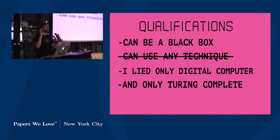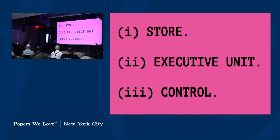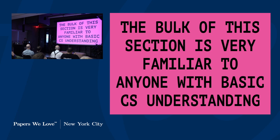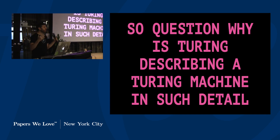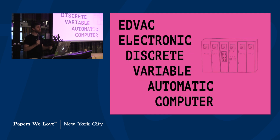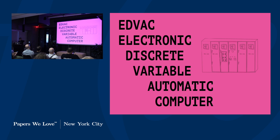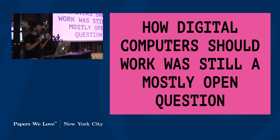Though not really, because he goes on a weird tangent about a group of single-sex male engineers creating a human homunculus that can take the test, and how he doesn't want to consider that. Honestly, he only wants to use digital computers — and really, only Turing-complete computers. He then explains how they work with a store, an executive unit, and a control. This section is very familiar to anyone with a basic CS understanding. The reason he explains all this is that Von Neumann's EDVAC report was only five years old — EDVAC standing for Electronic Discrete Variable Automatic Computer — the first binary digital computer.